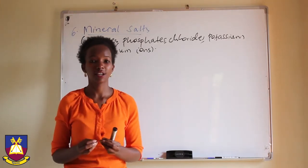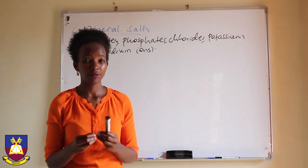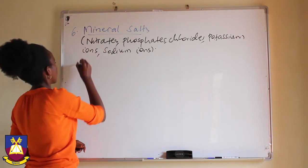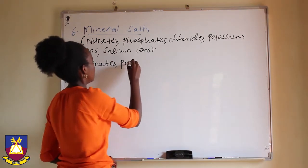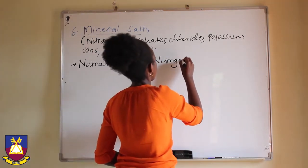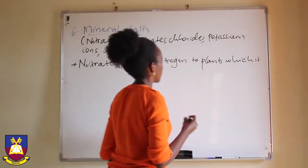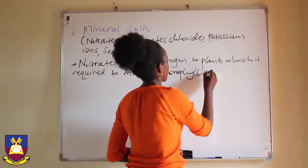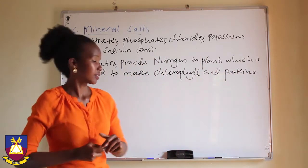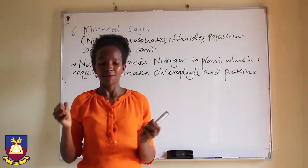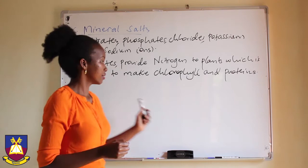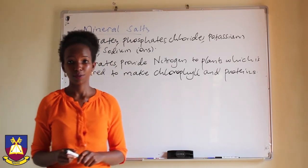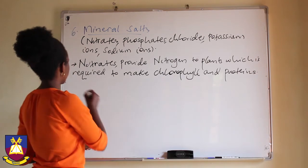Plants and other organisms that live in soil need a good amount of mineral salts in order to make the materials they need for life. For example, plants use chlorophyll to harvest sunlight and then use that sunlight to make the food they need, since they produce their own food through photosynthesis. Minerals also encourage the movement of water into plants.